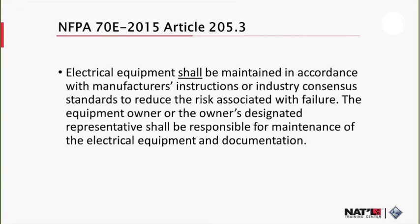What does it mean by a consensus standard? A consensus standard is what NFPA 70E itself is. Examples include 70E, NFPA 70, IEEE, American National Standards Institute documents, the NIDA acceptance testing specifications, and the NIDA maintenance testing specifications. These are all consensus standards. They are developed and reviewed by a group, not a single individual. They go through a public review period and are then considered a consensus standard and accepted practice. Article 205.3 requires that electrical equipment be maintained in accordance with manufacturer's instructions or industry consensus standards — this is a requirement, not a suggestion.